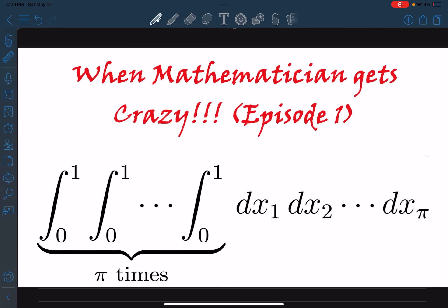We have integral from 0 to 1, and that integral is there π times, and then dx₁, dx₂, up to dx_π. At first look, it doesn't really make sense. What does it even mean to have π number of integrals?